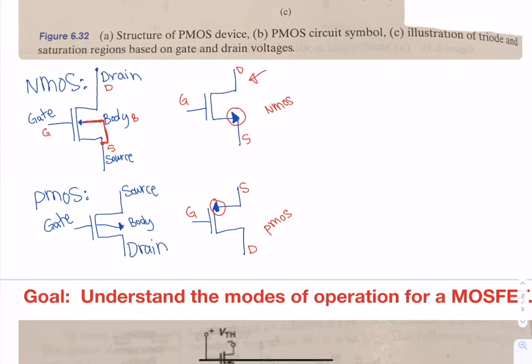For the PMOS, the same thing, you're going to connect the body to the source. And again, if not, then that threshold voltage will be higher than what is expected. If the normal threshold voltage is one volt, and you don't connect it, it might be 1.5 volts if you have that body connected to a different voltage value.